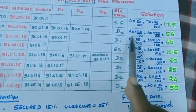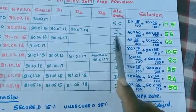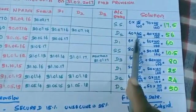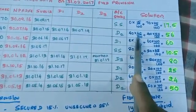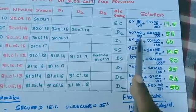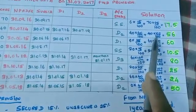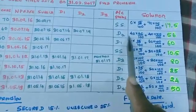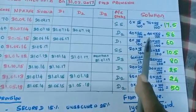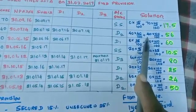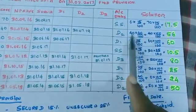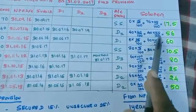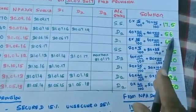For A2, the account is in D2 category. For D2, the secured portion has a provision of 40% and unsecured portion has a provision of 100%. Here the secured portion is 40 and unsecured portion is also 40. So 40 × 40/100 plus 40 × 100/100 equals 56.